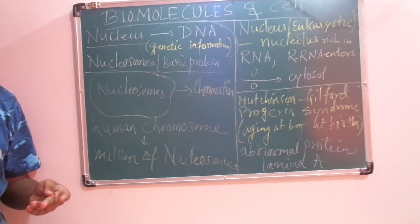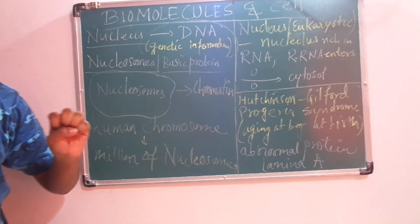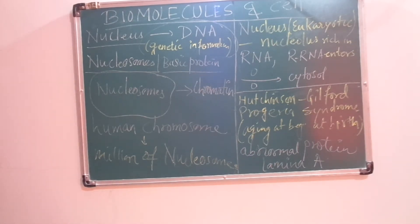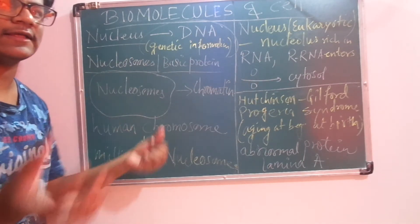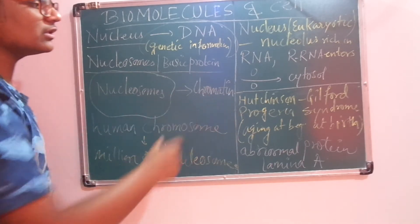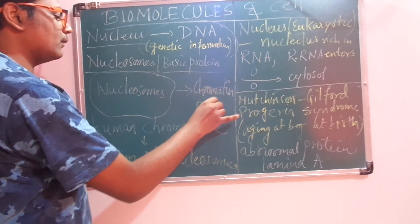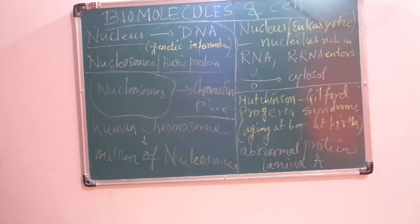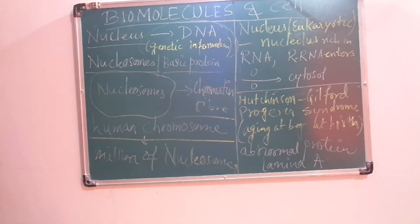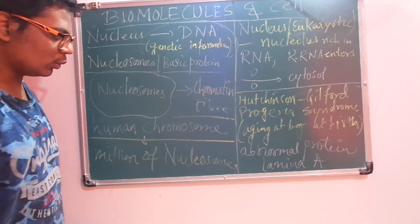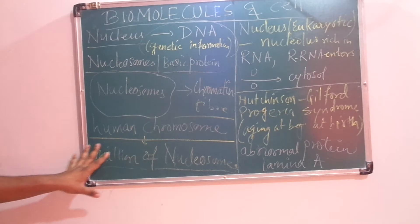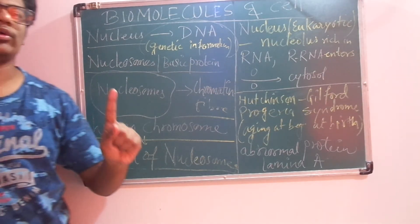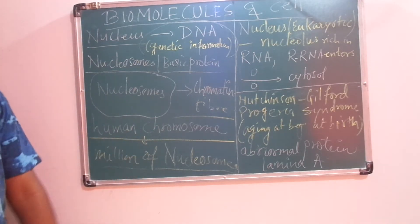Chromosome means 'color body.' When nucleosomes assemble together, that togetherness of nucleosomes is called a chromatin fiber. A single human chromosome contains millions of nucleosomes.